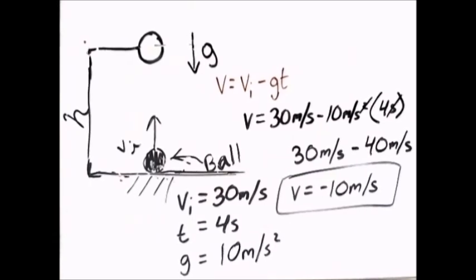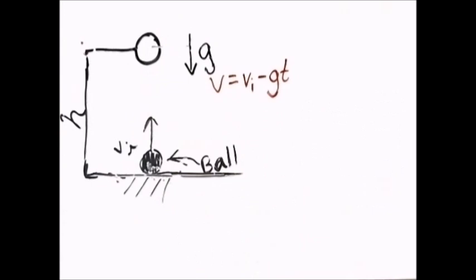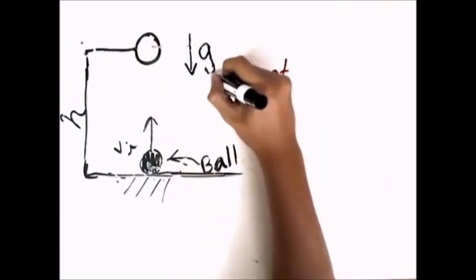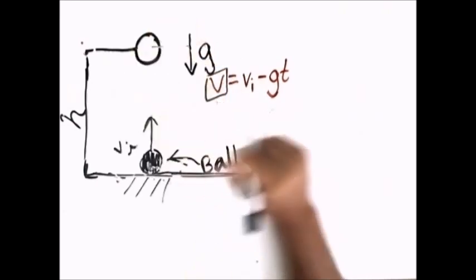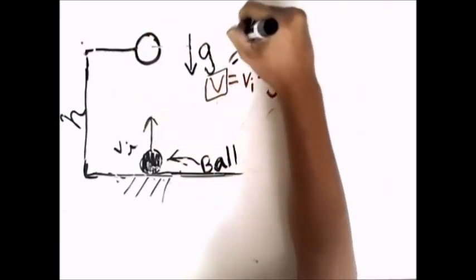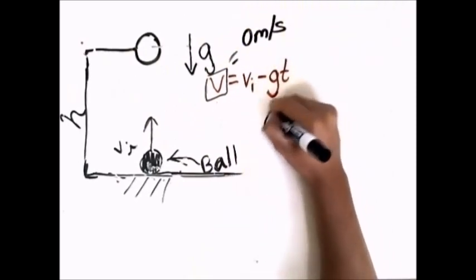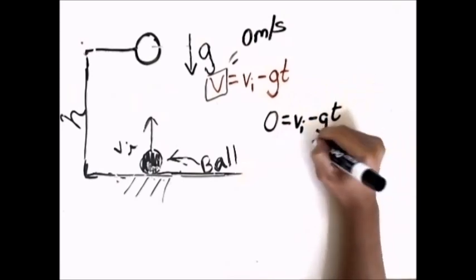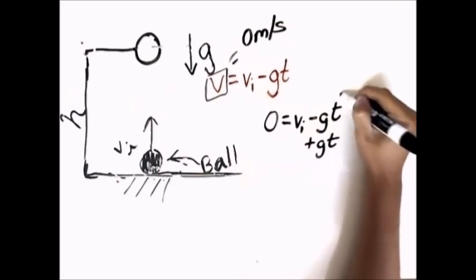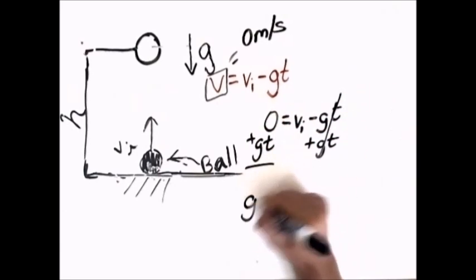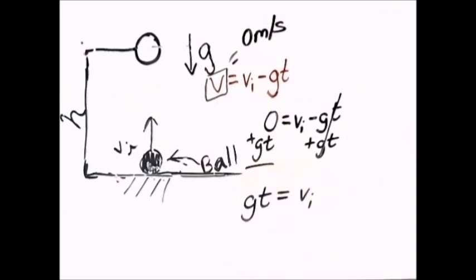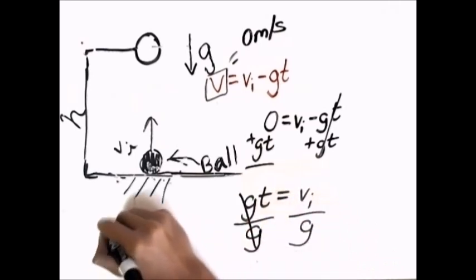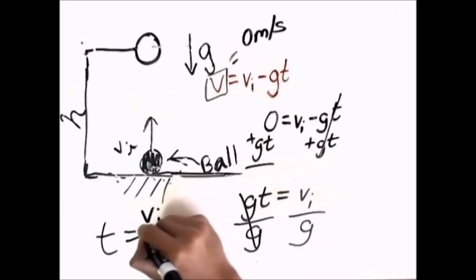This brings up an interesting question: how long will it take for the ball to reach its maximum height? To find that time, we simplify our formula. At maximum height the velocity is zero, so: 0 equals v-initial minus acceleration times time. Adding acceleration times time to both sides gives: acceleration times time equals v-initial. Dividing both sides by acceleration, we get: time equals v-initial divided by acceleration.